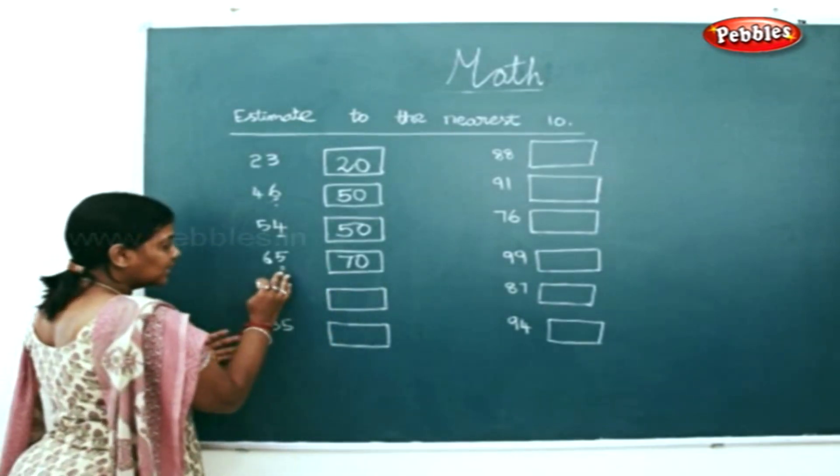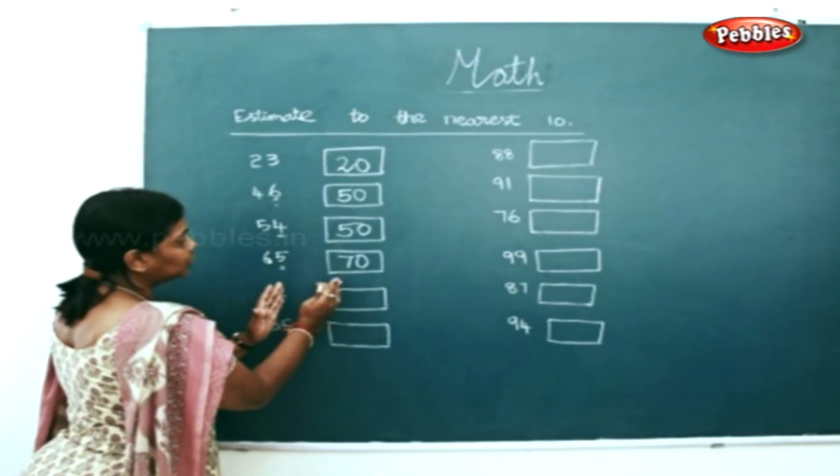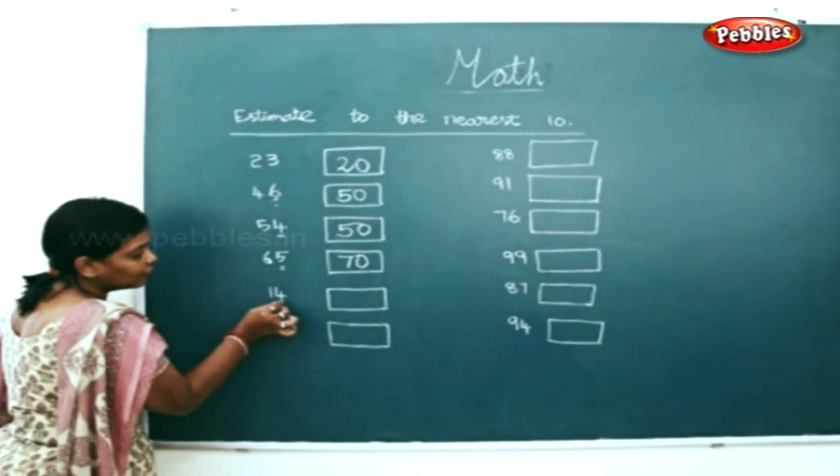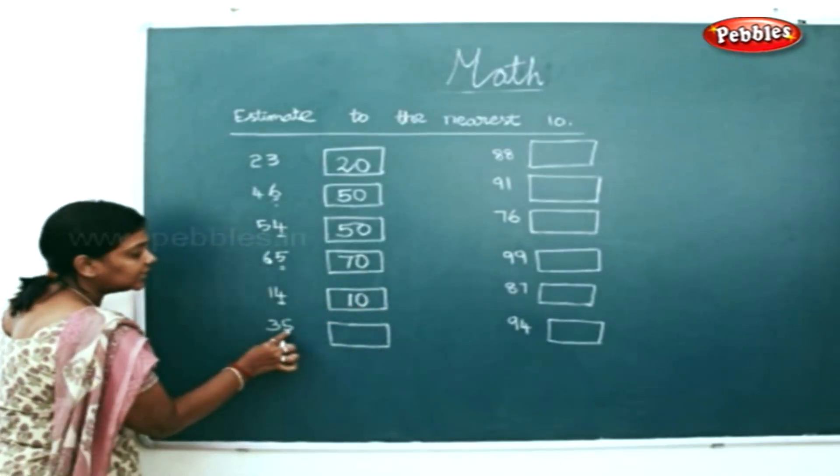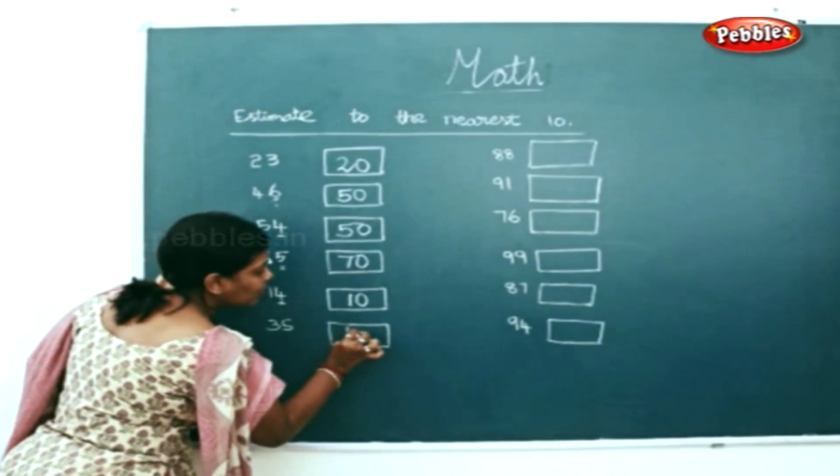If it's 5 alone, we will see the next closest bigger number to 10. 14 - it's 4, so it will be 10. 35 - so it will be 40.